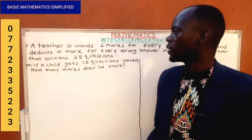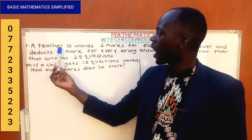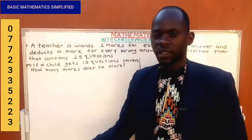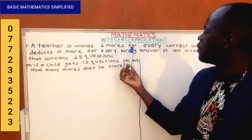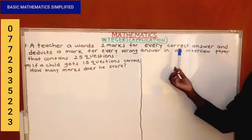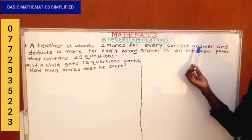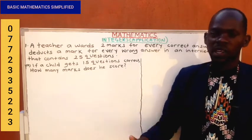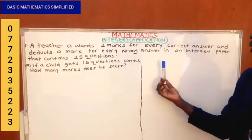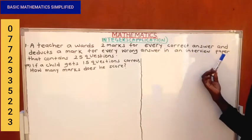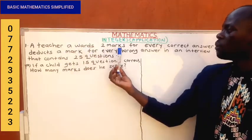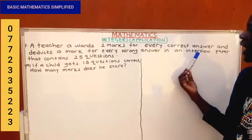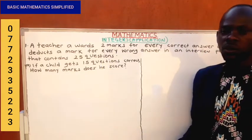Now the question is: a teacher awards two marks to a student for every correct answer. To award means to give marks. A teacher deducts — to deduct means to subtract or remove from what you already have — a mark for every wrong answer or response in an interview paper that contains 25 questions. This marking system is very unique.